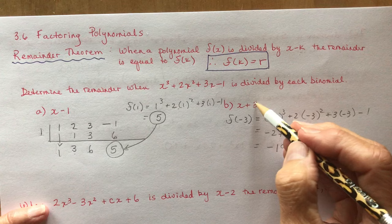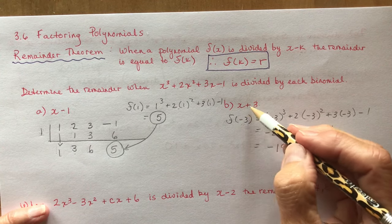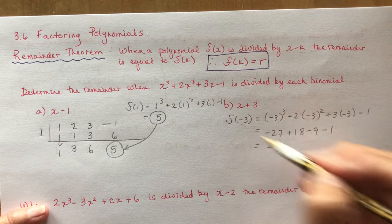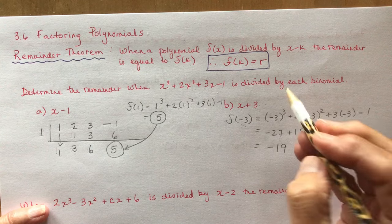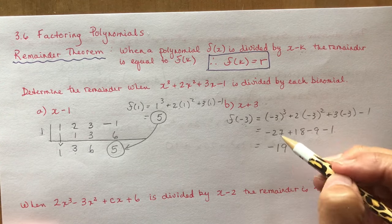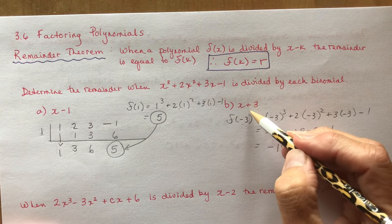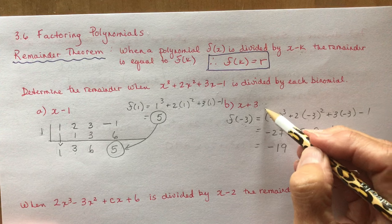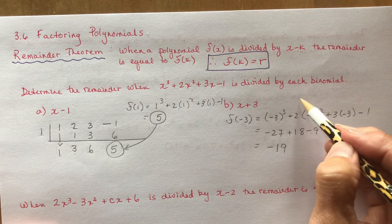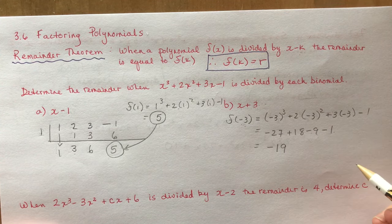Make sure to change the sign — remember that you're trying to find what the zero would be. So minus 3, and think about it: if f at minus 3 was zero, then that would be a factor, because it would be on the x-axis where all the y-coordinates are zero.